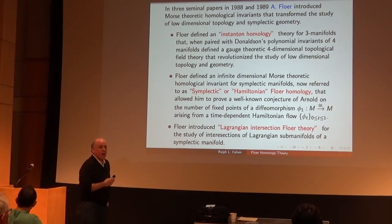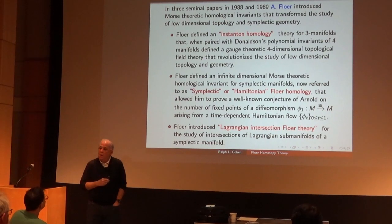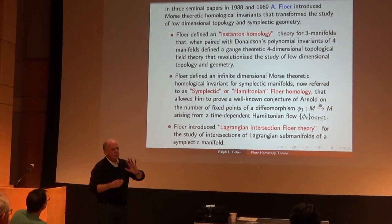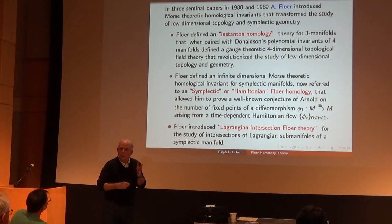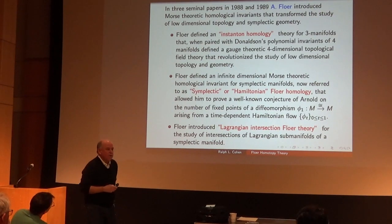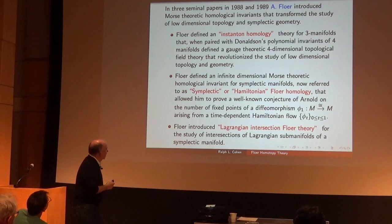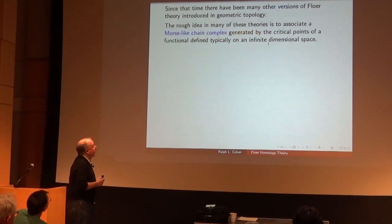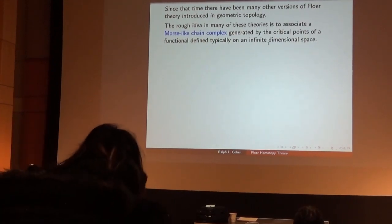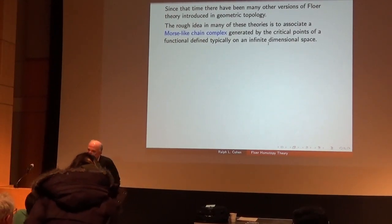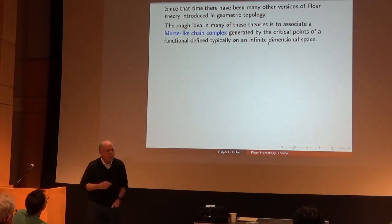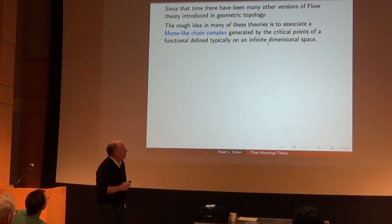Floer also used these ideas to study symplectic geometry. He introduced a Morse-theoretic homological invariant of symplectic manifolds, known as symplectic or Hamiltonian Floer homology, that allowed him to improve a well-known conjecture of Arnold about the number of fixed points of a diffeomorphism of a symplectic manifold coming from a Hamiltonian flow. He also introduced Lagrangian intersection Floer theory. Since then, several other versions have been introduced, most notably by Ozsváth and Szabó, Heegaard Floer homology, quite useful in three-manifold theory.